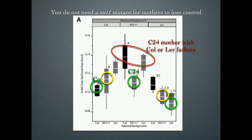What's interesting is that if you look at the crosses between Columbia and Landsberg, or Columbia on Landsberg and Landsberg on Columbia, it would suggest that whatever Columbia and Landsberg are doing might not be the same thing. Because if Columbia is doing something to C24, and Landsberg is doing something to C24, and it was the same mechanism, the same pathway, they shouldn't have that same response to each other. This suggests that maybe these lines are showing very independent mechanisms for the targets they're imprinting.